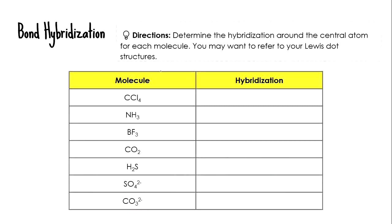Go ahead and pause the video and determine the hybridization around the central atom for each of the molecules mentioned in today's notes. You may want to refer to your Lewis dot structures to clearly see how many electron domains are around the central atom. Once you're done, play the video to check your answers.